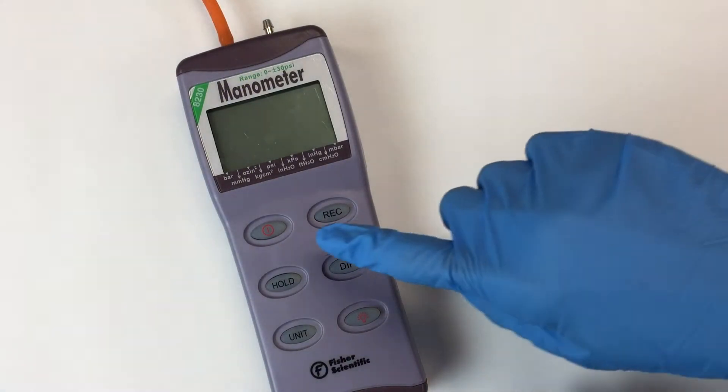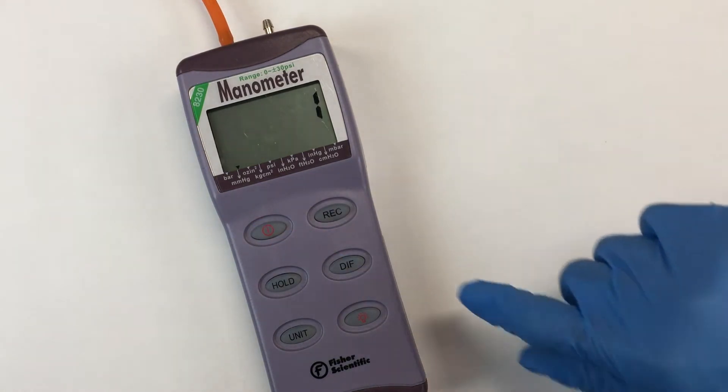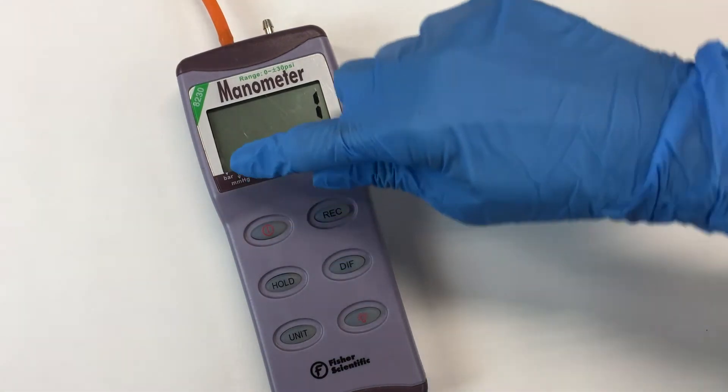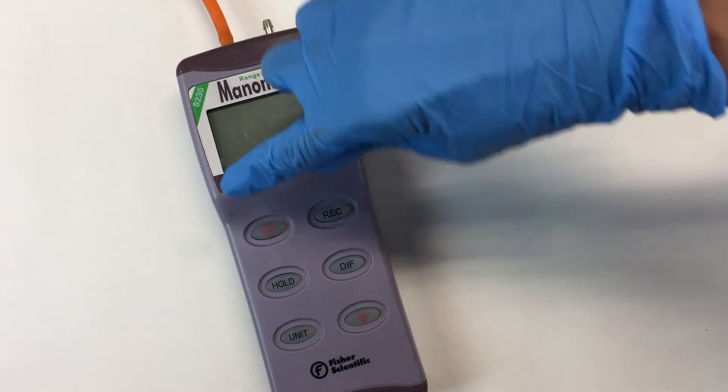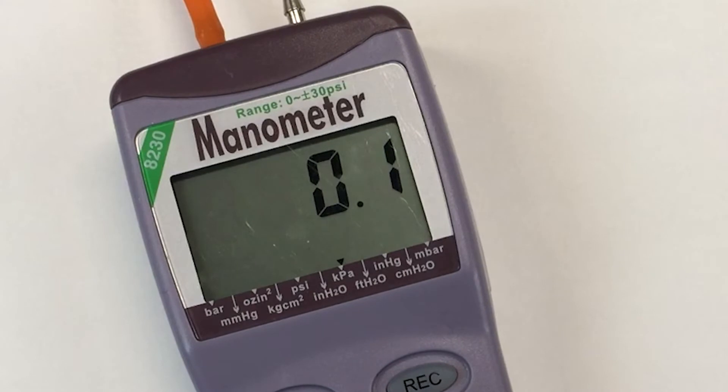Turn on the manometer using the power button. It should be set to millimeters of mercury. If it is not, you can use the unit button to cycle through the various units available until millimeters of mercury is indicated.